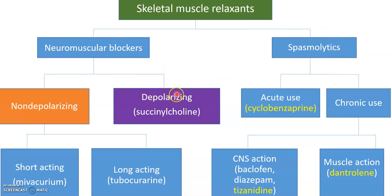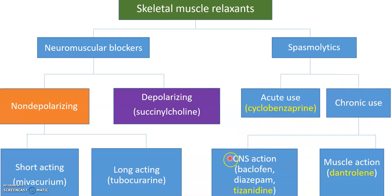For depolarizing agents, there is only one: succinylcholine, also known as suxamethonium. For spasmolytics, we have acute use agents like cyclobenzaprine, and for chronic use, agents acting on the CNS such as baclofen, diazepam, and tizanidine. The agent that acts directly on muscle is dantrolene.